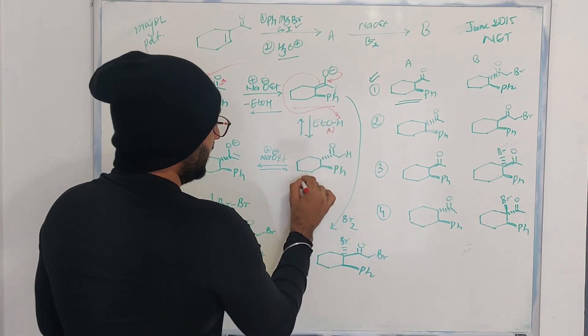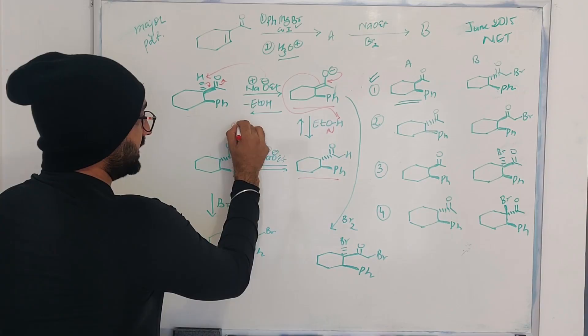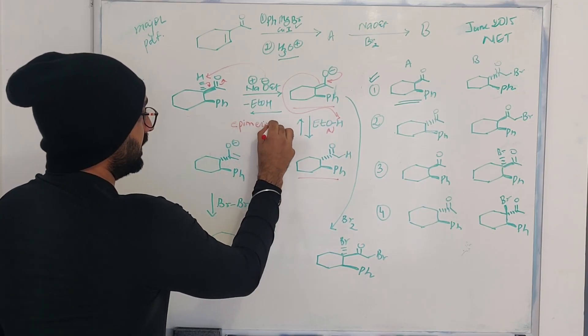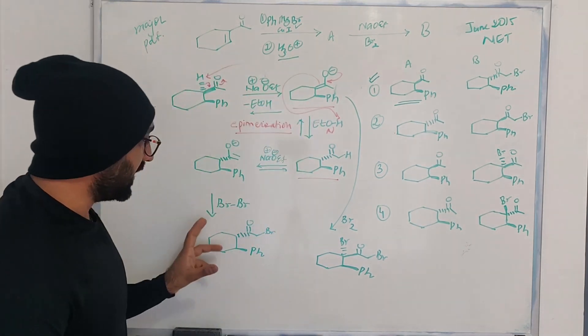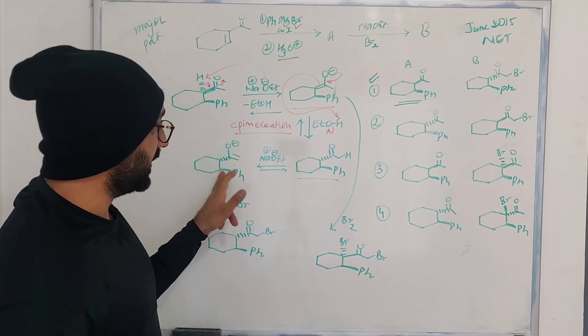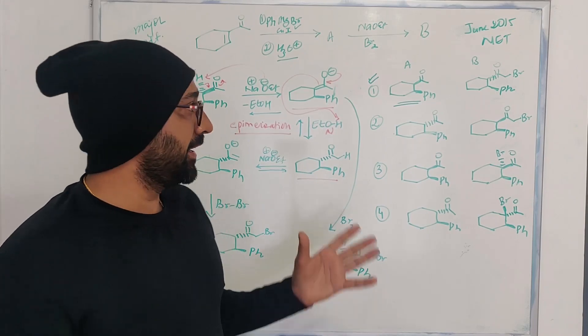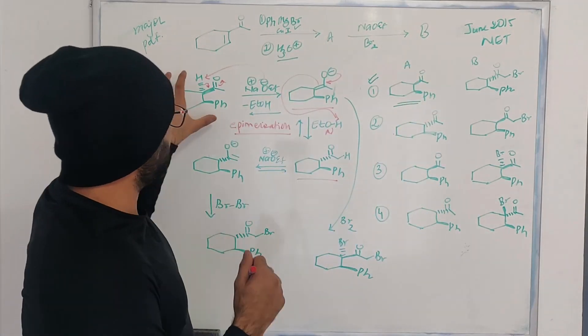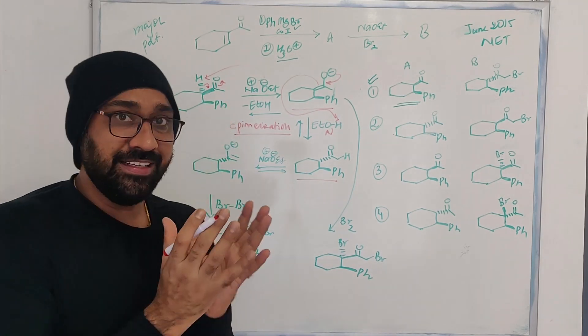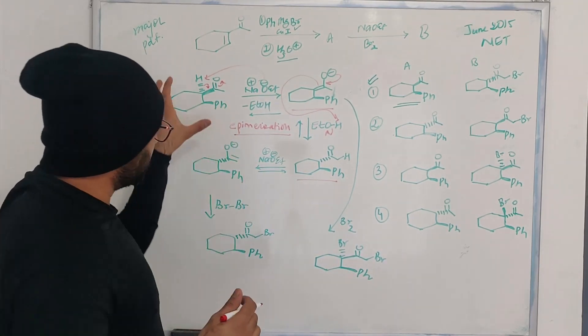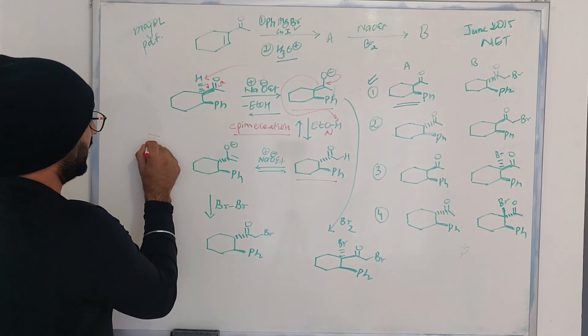In this reaction, as you can see, enolate then comes back and it is going to pick up this particular proton. And what is happening? We are getting the compound. Basically, what is happening? In these two step sequence, it is the epimerization that is happening. And all the steps are equilibrium. Now, how would you know that equilibrium is happening?